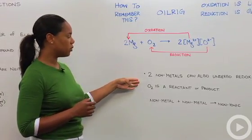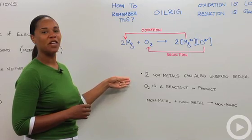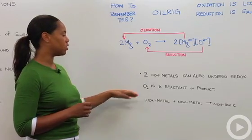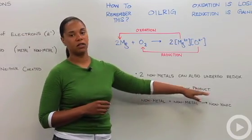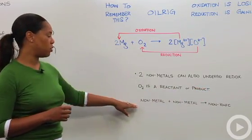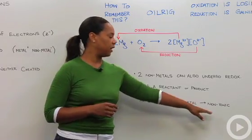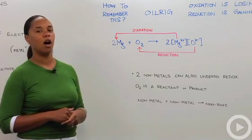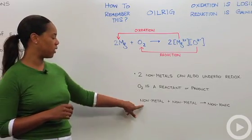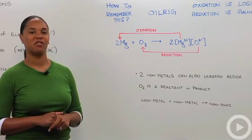So then also last point is that you can have oxidation reduction between two non-metals. And how do you know that that's what's occurring? Is that oxygen is formed as a reactant or a product. And when you have two non-metals reacting in an oxidation reduction reaction, the product is non-ionic, unlike in our reaction with a metal and a non-metal. And that's pretty much oxidation reduction reactions.